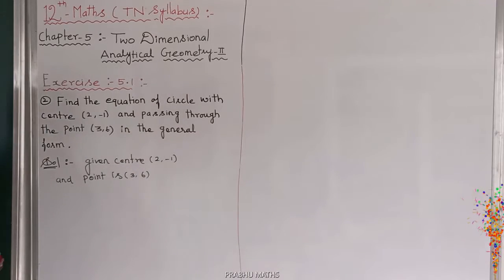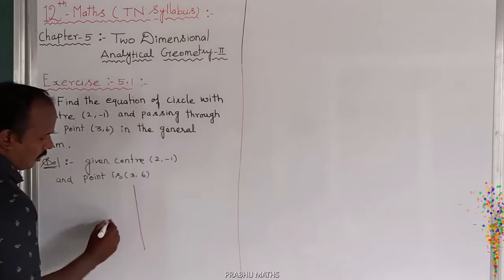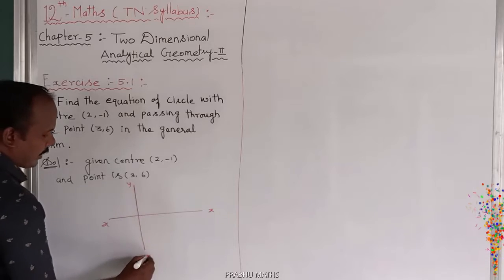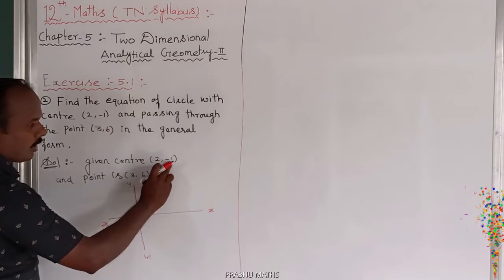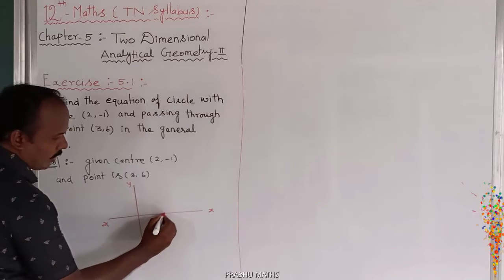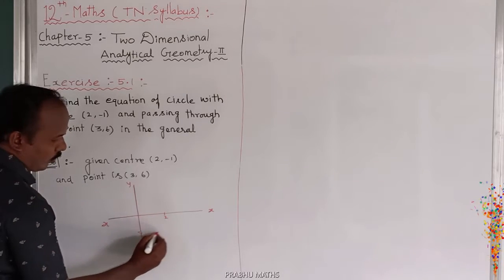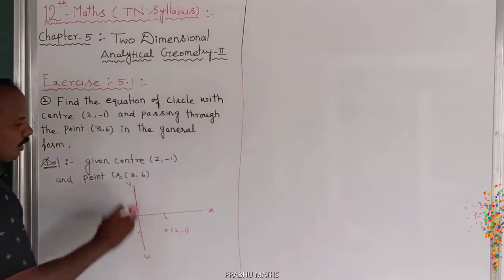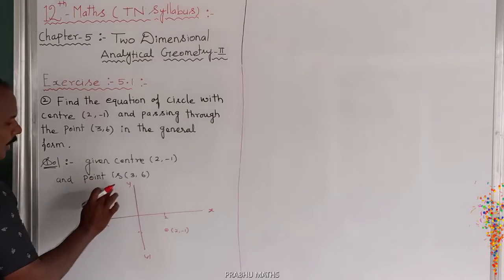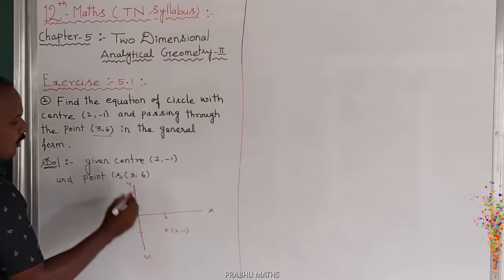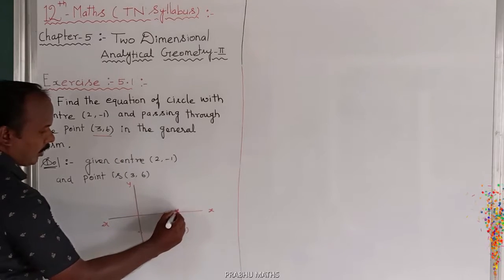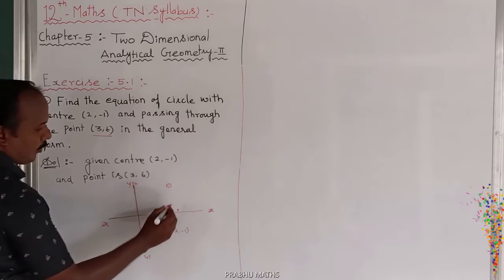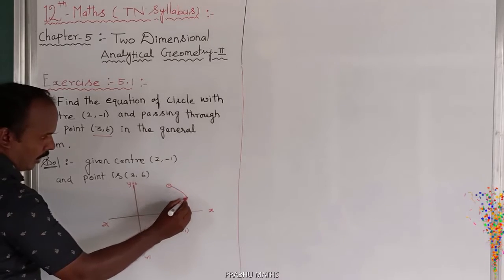First of all, draw the diagram. So this one draws the x-axis and y-axis. The center is (2, -1) — so 2 on the x-axis and -1 on the y-axis — that is (2, -1). Next, the point passing through the circle is (3, 6), so we mark (3, 6) on the diagram. This point passes through the circle.